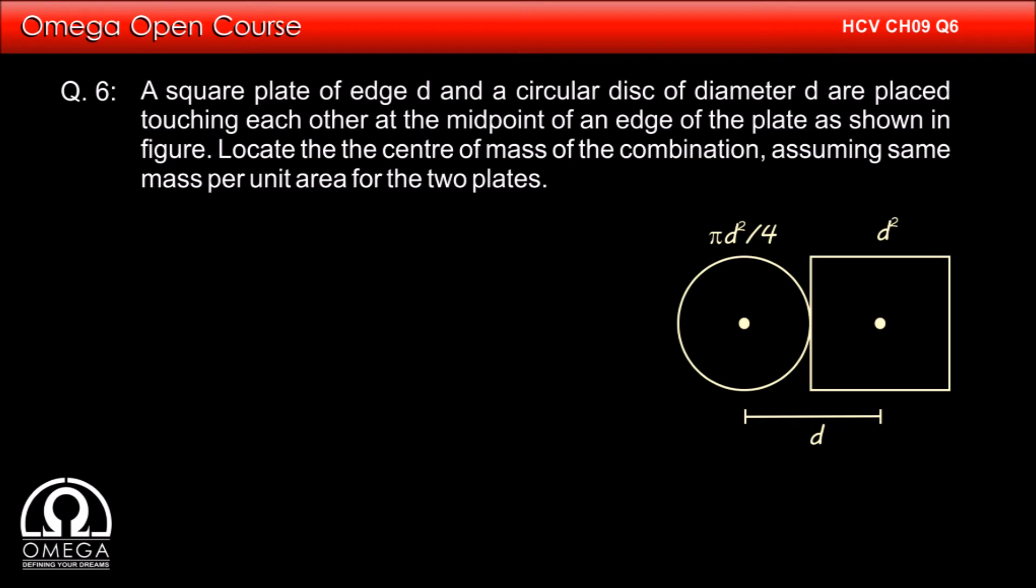Therefore, the distance of center of mass from the origin is equal to d into d squared divided by pi d squared by 4 plus d squared, which on simplification gives 4d divided by pi plus 4.